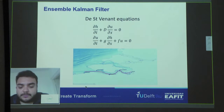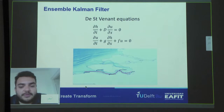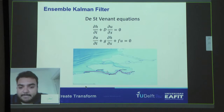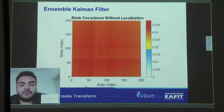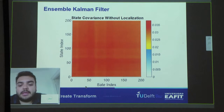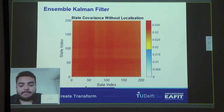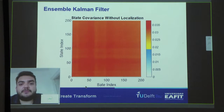I want to show you an example using the St. Venant equations, which are normally used to describe the behavior of rivers or bodies of water — in this case, a story in the Netherlands. We have five different cities where we have observations of the water level. If we apply the Ensemble Kalman filter to these equations and calculate the covariance of the state — remember we use the ensemble covariance to approximate the state covariance — we obtain something like this. This is the value when the state is stable, the stable covariance, and here we can see that all states are related to all other states.